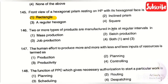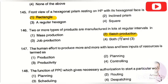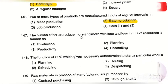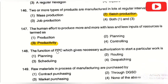The next question: two or more types of products manufactured in lots at regular intervals is — option 1: mass production, option 2: batch production, option 3: job production, option 4: both one and three. The right answer is option 2, batch production. Next: human efforts to produce more with less input resource is termed as — productivity. The right answer is option 3, productivity.